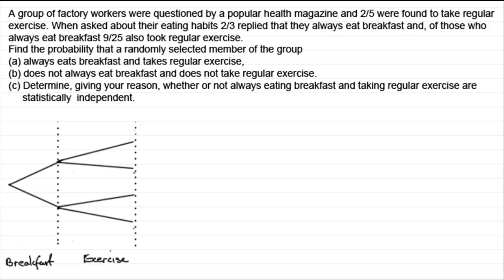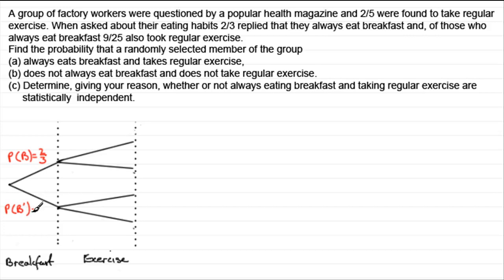We'll consider taking breakfast first. The probability of taking breakfast, we're told, is two thirds — two thirds always ate breakfast. So we put that in as the probability of taking breakfast equals two thirds. The probability of not taking breakfast — I'll label that B with a dash — is going to equal one third. Remember these probabilities must add up to one.